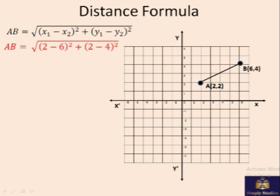So it's 2 minus 6 whole squared, plus the y-coordinates are 2 and 4, so it's 2 minus 4 squared, which gives you 16 and 4 and that's 20 square root, which is equal to 2 root 5, which is the distance between A and B. That's how distance formula is used.